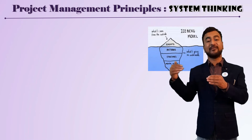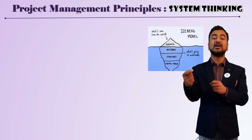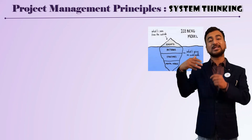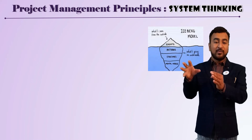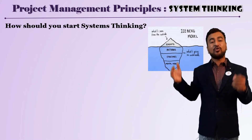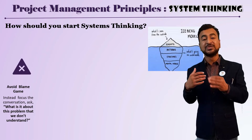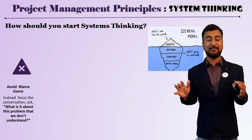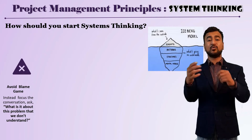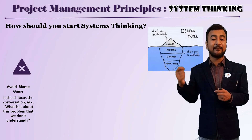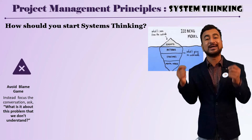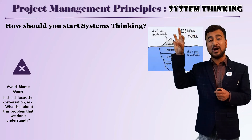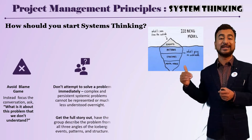What are the support structures that create those patterns? And what are the mental models that support that support structure? You need to understand all of these. When applying system thinking, first avoid the blame game. Instead of asking who made a mistake, ask: what is it about this problem that we don't understand? Try to understand the full depth of that iceberg — not just the tip.